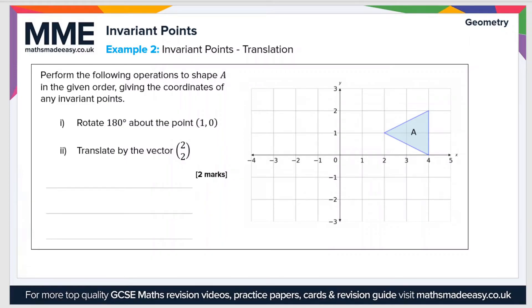So let's take a look at our second example now. Perform the following operations to shape A in the given order, giving the coordinates of any invariant points. So the first one, rotate 180 degrees about the point 1, 0. So let's just mark the point 1, 0 there.